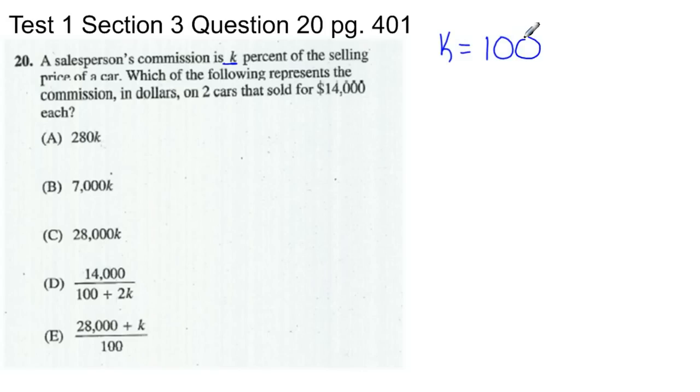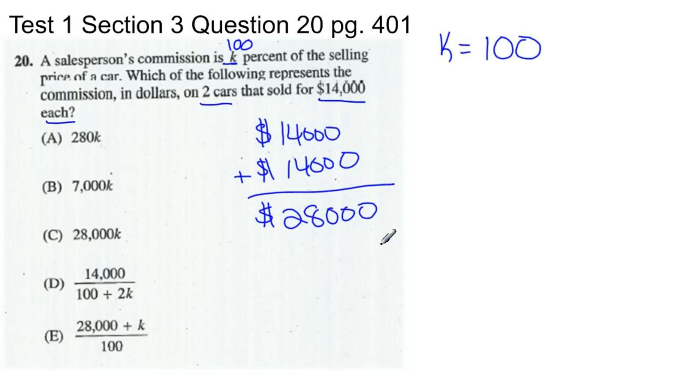Let's say that K equals 100. Now let's reread this. A salesperson's commission is 100 percent of the selling price of a car. Which represents the commission in dollars on two cars that sold for $14,000 each? We had car one that sold for $14,000, and car two that sold for $14,000. So total, the price was $28,000.